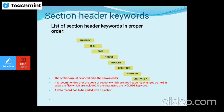The section header keywords must be specified in this proper order: RUNSPEC, GRID, EDIT, PROPS, REGIONS, SOLUTION, SUMMARY, and SCHEDULE. All these sections must be specified in the above-shown order only and should not be changed. These sections should be included in the data file using the INCLUDE keyword, and each data record must be ended with a slash.